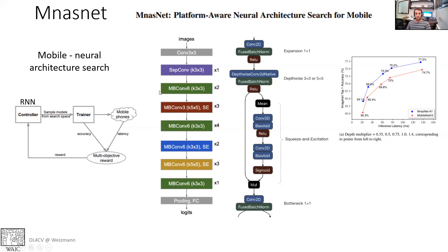Comparing MNASNet to MobileNet v2 on the efficient frontier, we can see that for different efficiency metrics — in this case inference latency — MNASNet improves on each one. The concept of neural architecture search is now used in all papers trying to find more efficient architectures.